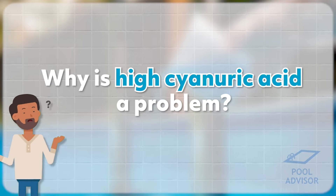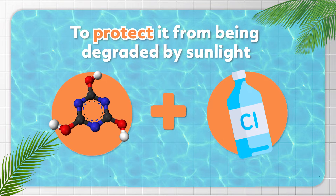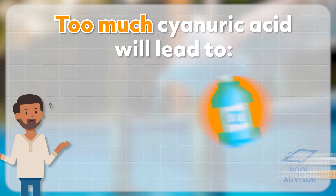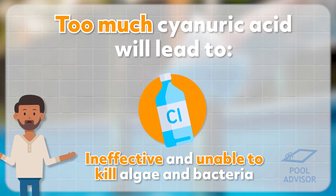So, why is high cyanuric acid a problem for your pool? Well, cyanuric acid reacts with the chlorine that we add to our pool to protect it from being degraded by sunlight. However, once the chlorine has reacted to form this new form that's bound to cyanuric acid, it's not actually effective at killing algae and bacteria anymore. If you have too much cyanuric acid in your pool, virtually all of the chlorine will be in this reacted form and that means that your chlorine will basically be ineffective and unable to kill algae and bacteria, which will lead to algae outbreaks in your pool and unsanitary conditions which are dangerous for swimmers.